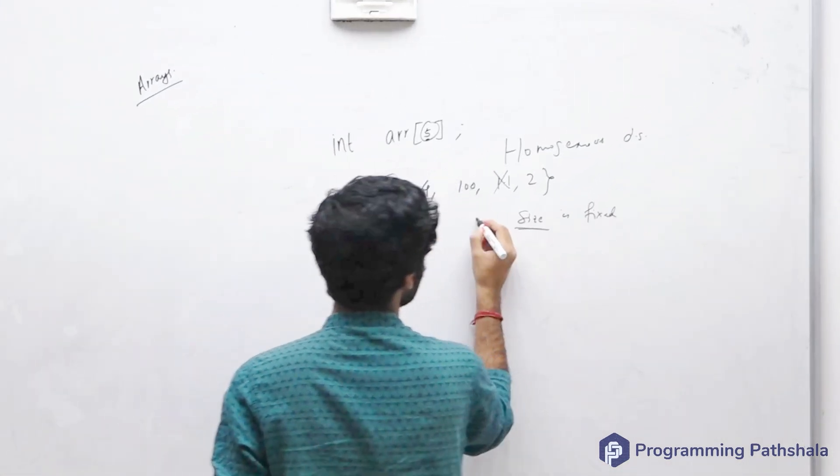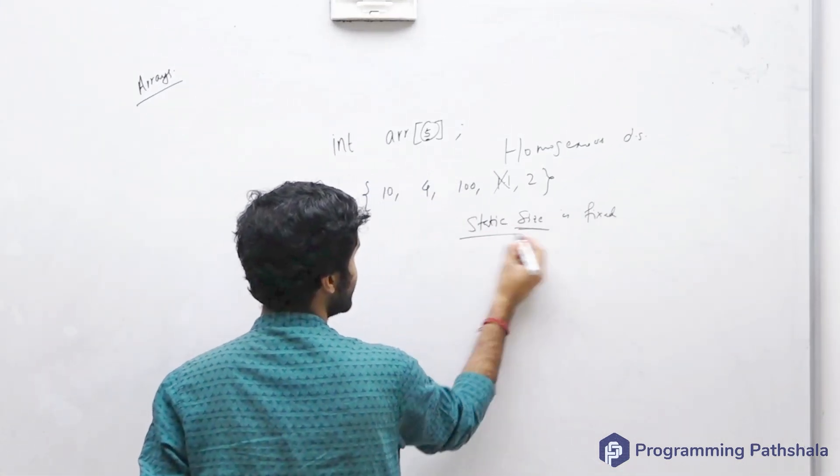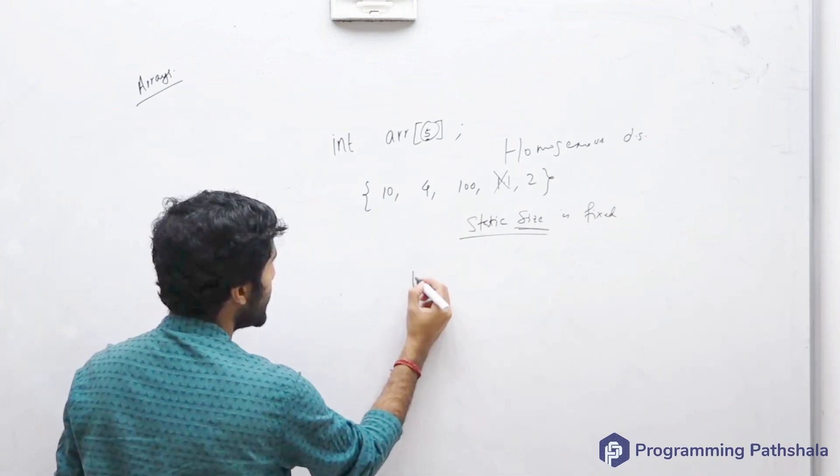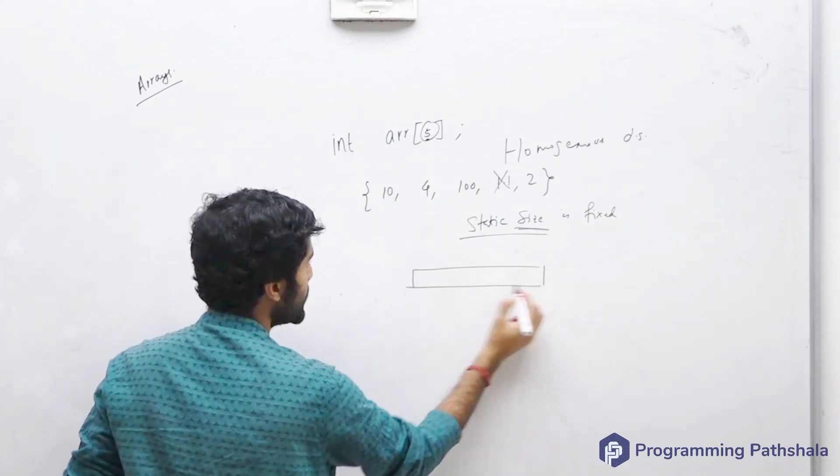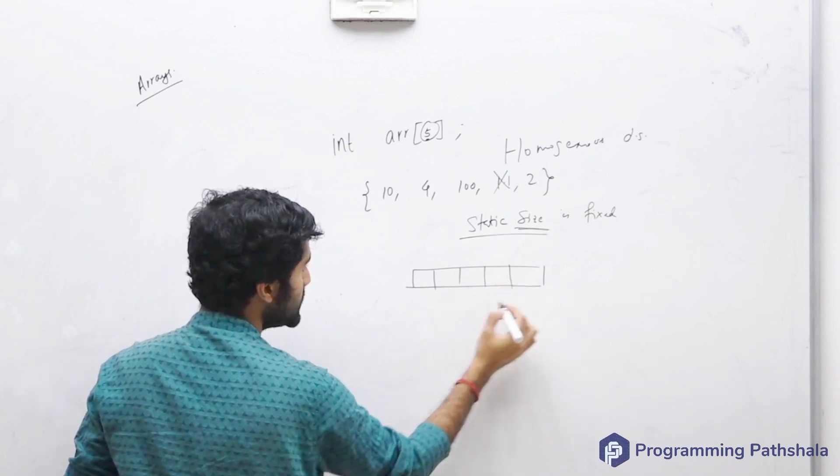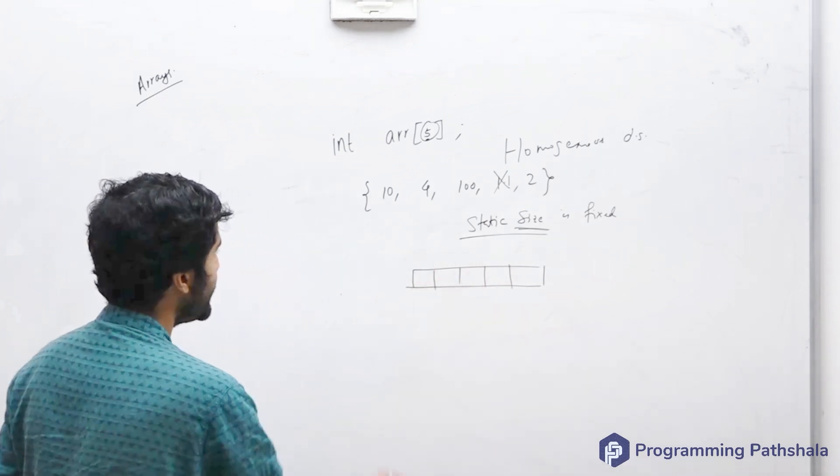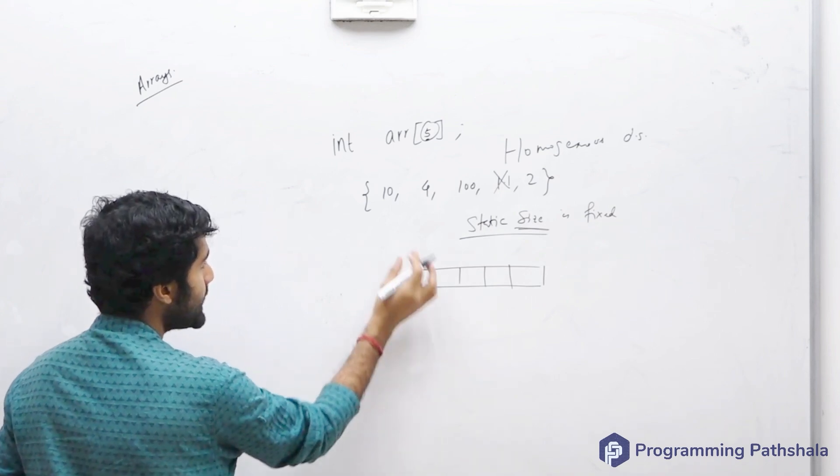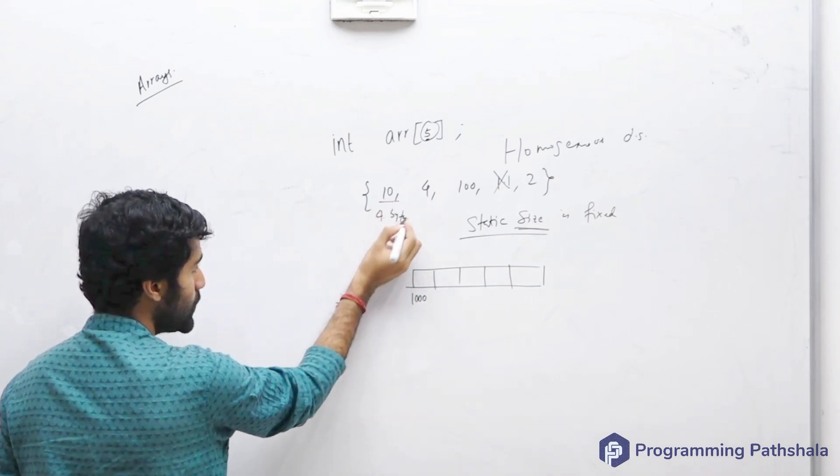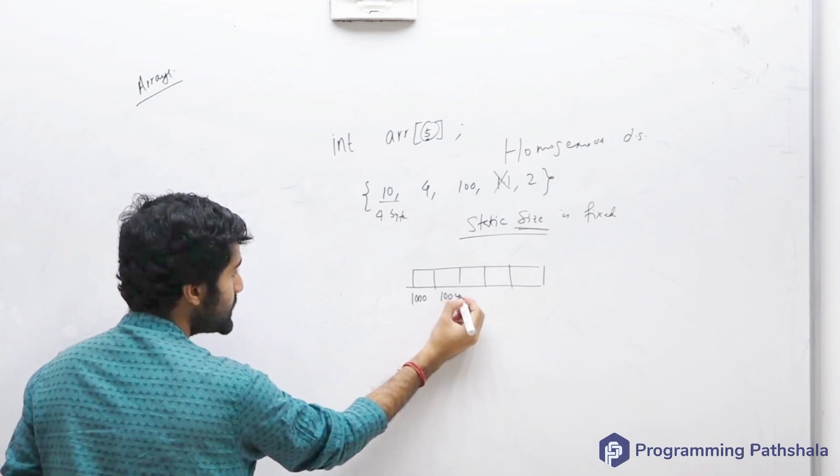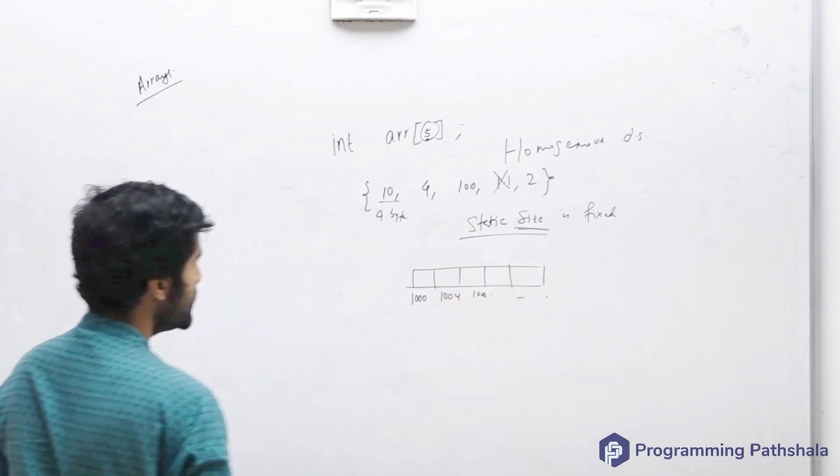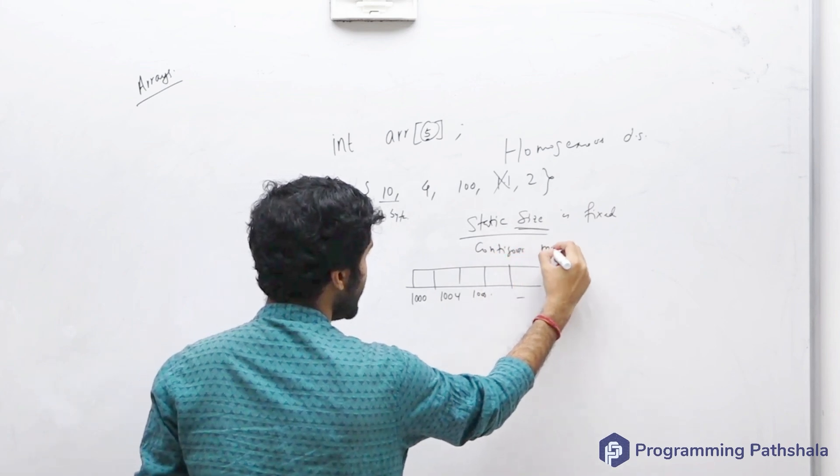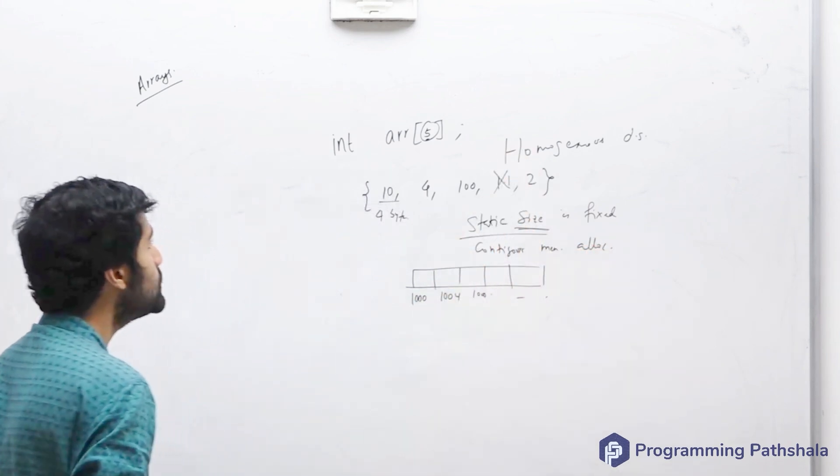Another important thing is that memory allocation happens in a contiguous manner. If you've been allotted five cells, all this memory will be contiguous. If this is memory location 1000 and every integer is 4 bytes, then the next memory will be 1004, then 1008, and so on. These are the three most important attributes of an array.